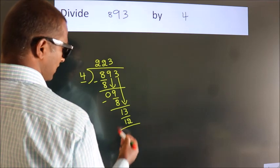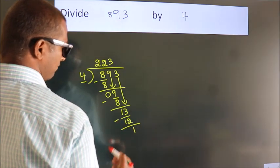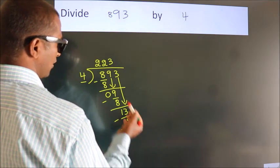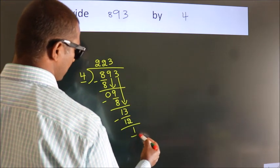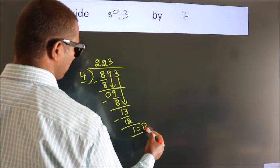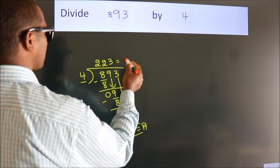Now, we subtract and get 1. After this, no more numbers to bring down, so we stop here. This is our remainder. This is our quotient.